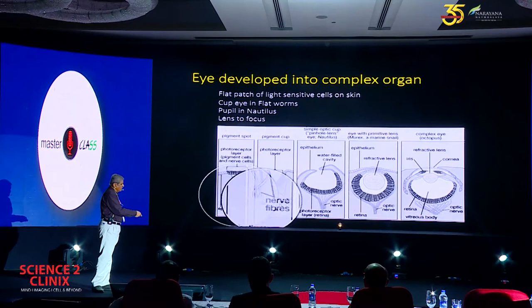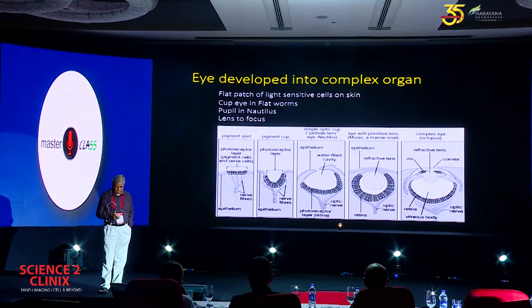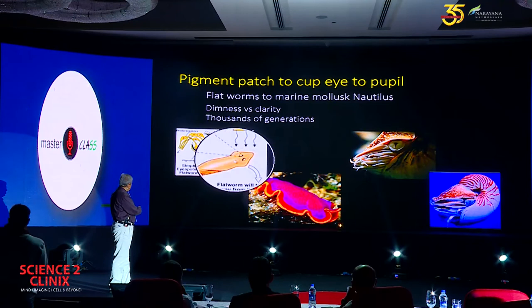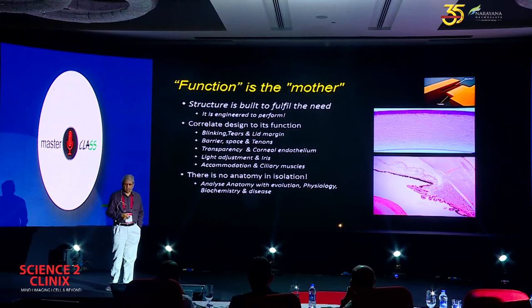The evolution of the eye itself is need-based. There was a need to see, a need to detect light, a need to define itself in life. That is a pigment pack. Flat worms, even today, will have very primitive kinds of eyes. A mollusc will have an eye which has no lens, just an aperture. Function is the mother. It is not the structure. Function is the mother — structure is built to fulfill the need.